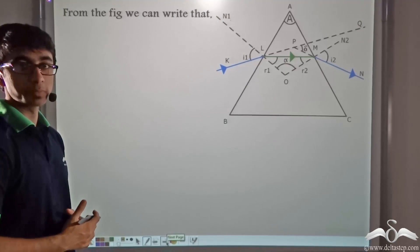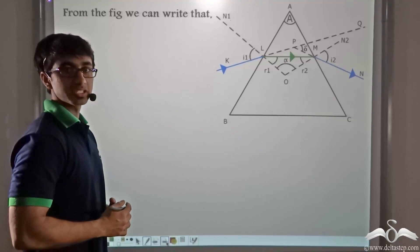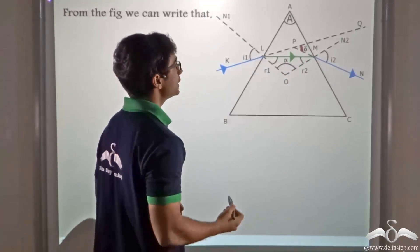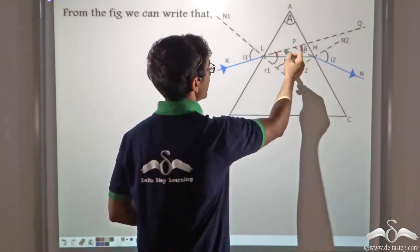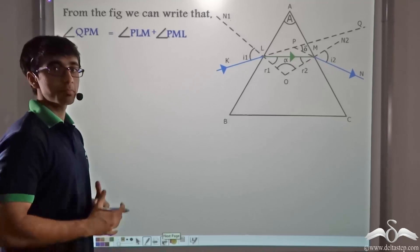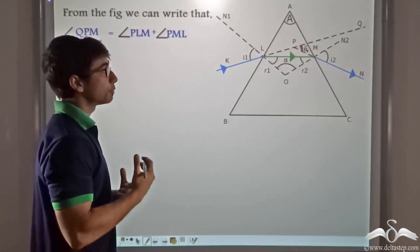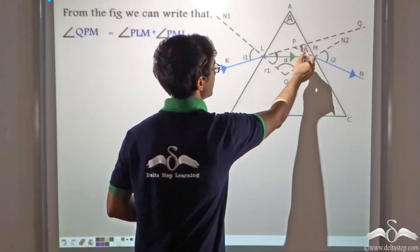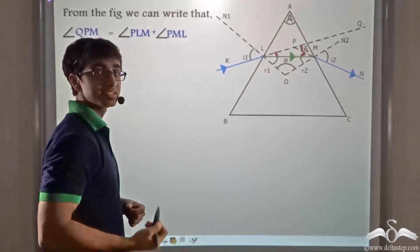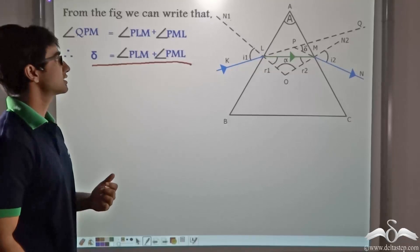This is the diagram obtained when the light ray falls on the first refracting surface and emerges from the second refracting surface. Observing this diagram closely, angle QPM — which is delta — is equal to angle PLM plus angle PML. This is because in a triangle, the external angle equals the sum of the two opposite internal angles. So PLM and PML are the two opposite internal angles, and their sum equals the external angle delta. Thus we can write: delta = angle PLM + angle PML.